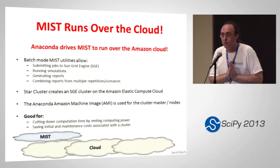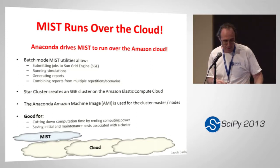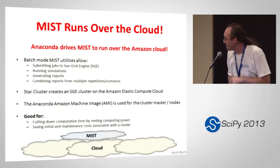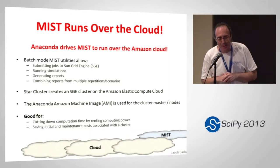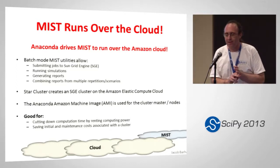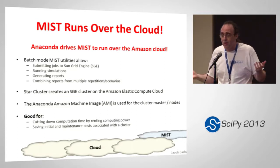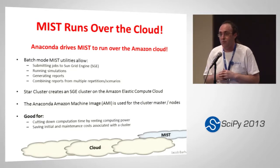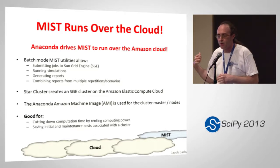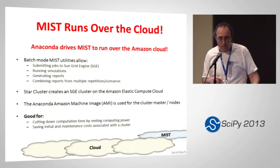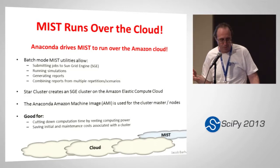Most importantly, MIST now runs over the cloud. If you don't have access to a cluster, you can go to the Amazon cloud and run it. It uses StarCluster and launches a SunGrid Engine cluster on the cloud. There is an available Anaconda AMI that MIST uses for the cluster master and nodes. This is good if you don't have access to a cluster — you can still run fairly large simulations and cut down your computation time, or you can save the investment in the cloud entirely if you don't run many simulations.